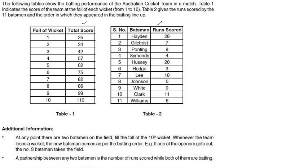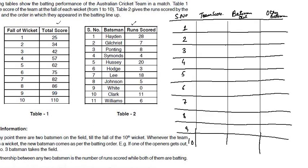Now let's make a table first. The first wicket fell at the score of 25. The run scored by Hayden is 28 and the run scored by Gilchrist is 7. Now if Hayden scored 28 runs and the first wicket fell at the score of 25, then Hayden should not be that person — so it means Gilchrist got out.